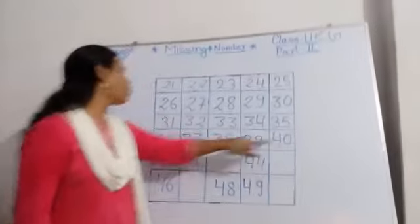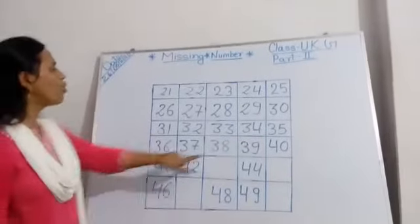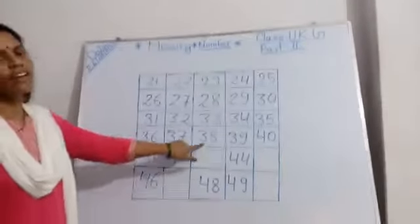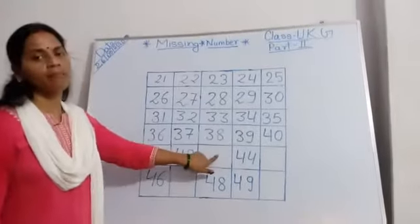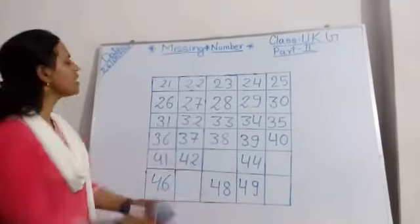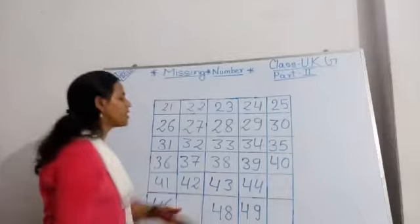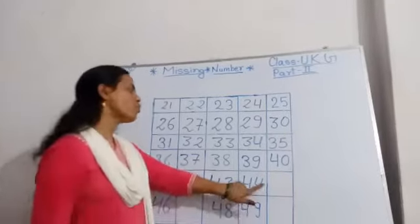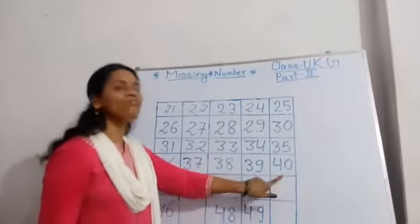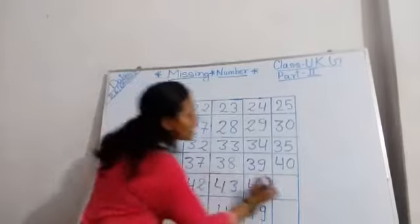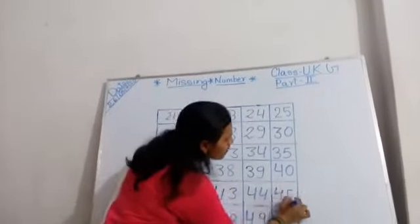39 after 40, 40 after 41, 41 after 42, 42 after 43. But 43 is missing, so write down 43. 43 after 44, 44 after 45. But 45 is missing, write down 45.